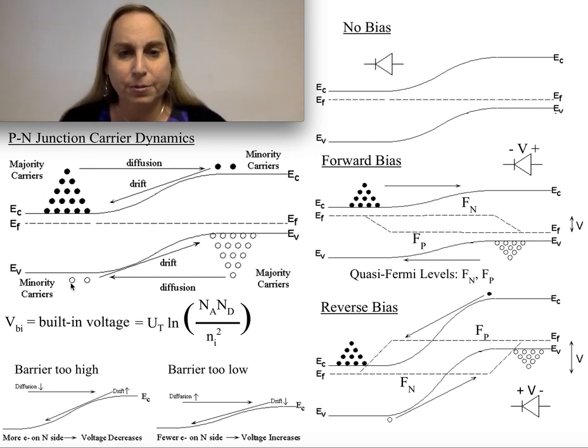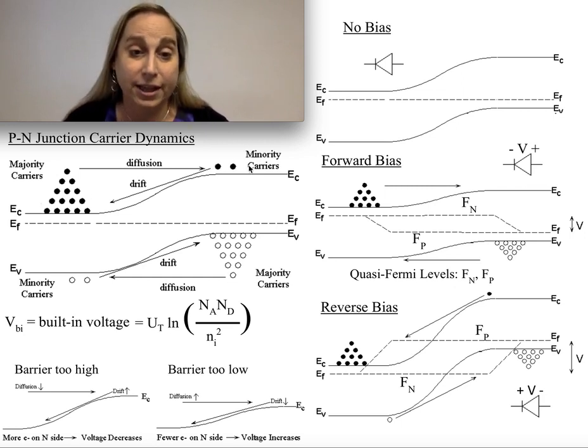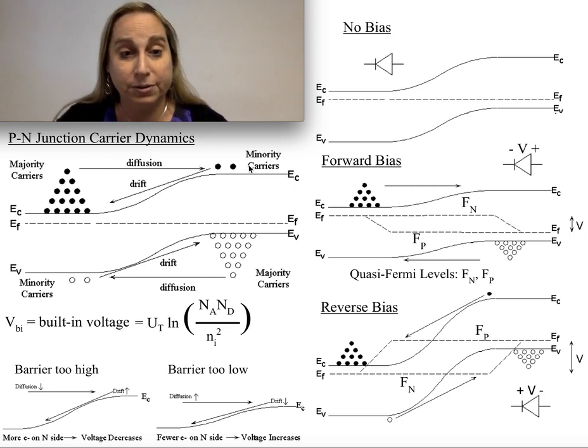In fact, that difference in doping, the difference between the majority from the number of electrons you have, or electron carriers you have on this side, to the level on this side, that ratio turns out to be related to the built-in potential voltage.